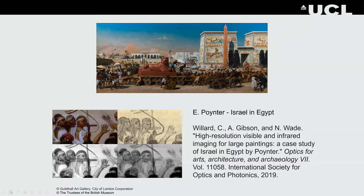This is a case study we did a couple of years ago with the Guildhall Art Gallery in London. They have a painting by Poynter of Israel and Egypt, and there are reports in the Illustrated London News that the composition was changed after it was purchased, which was after its first exhibition. We wanted to image it to see if we could find under-drawings or anything in the infrared that would make that easy to identify.